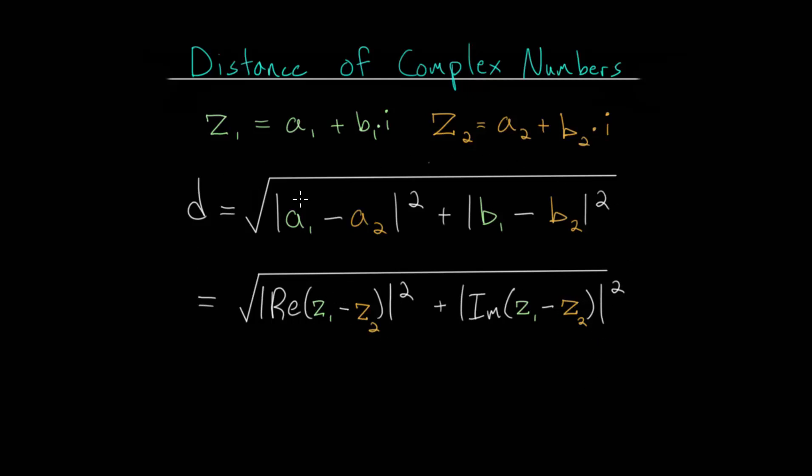So with this formula, let's now look at an example to get some practice on actually using it. So let's say in our example problem that we have a complex number Z1 equal to 3 minus 4i, and we have a complex number Z2 equal to minus 6 plus 2i. And we just need to find the distance between these two points.